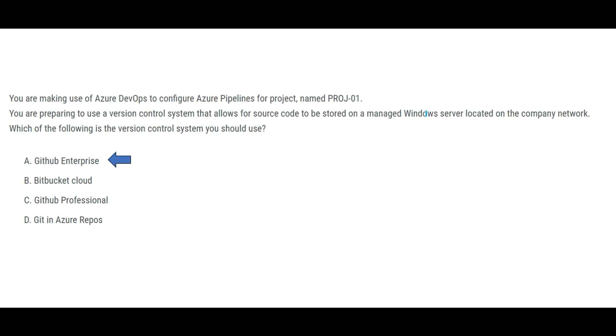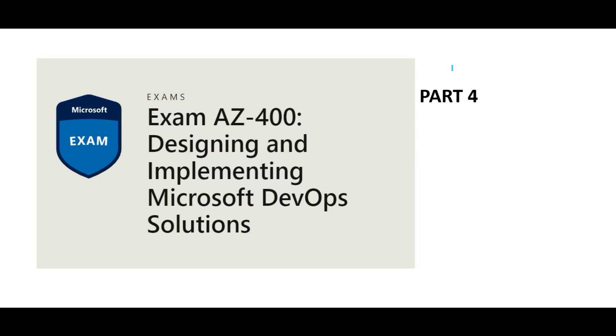Those are the two options to use, though some places on the web suggest using GitHub Enterprise. There are some more questions in the members area — Cloud Kernel or Cloud Ninja members can access them. This brings us to the end of part four. See you in the next one.